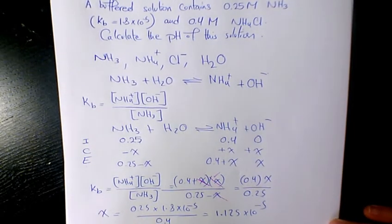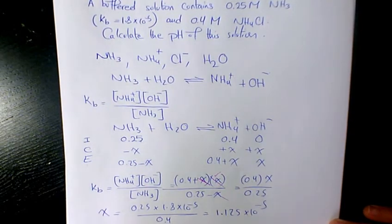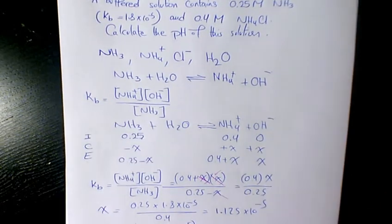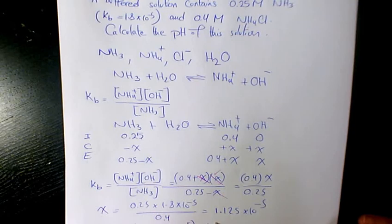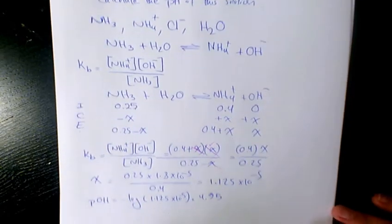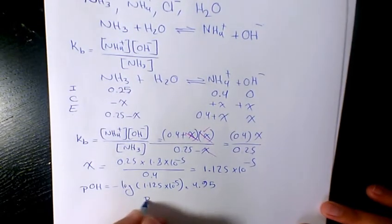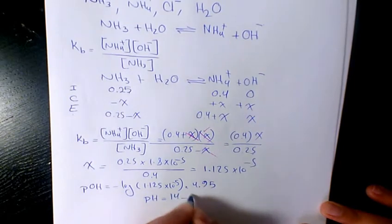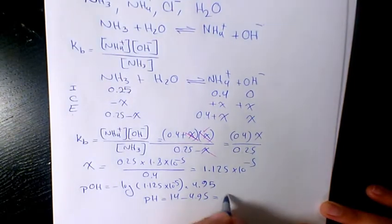And then based on that we can find pOH, which is negative log of this number, 1.125 times 10 to the power of negative 5. That will be 4.95. That's the pOH. If you want to find pH, that will be 14 minus 4.95, that will be 9.05. So that's the pH.